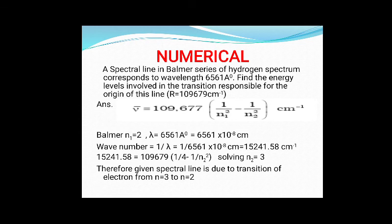Next numerical: a spectral line in the Balmer series of the hydrogen spectrum corresponds to the wavelength λ = 6561 Å. Find the energy levels involved in the transition responsible for the origin of this line. For the Balmer series, n1 is always two. We are given λ and need to find n2.